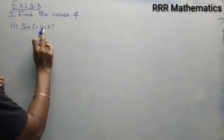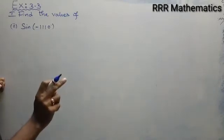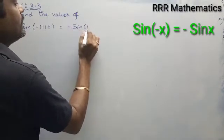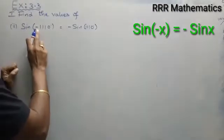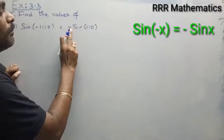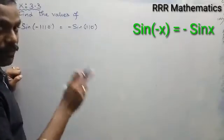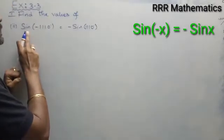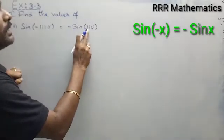Now, sin of minus 1110 degree. Sin(minus theta) — since minus theta lies in the fourth quadrant, and in the fourth quadrant sin is negative, therefore sin(minus theta) equals minus sin theta. So sin of minus 1110 degree can be written as minus sin 1110 degree.